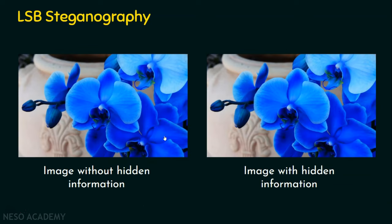Let me show an example with a blue orchids image. The first image is without hidden information, and the second is with hidden information. No one can tell that information is hidden in the second image. For each pixel, we take its 24-bit RGB value and replace the least significant bits of the R, G, and B parts with the binary bits of our hidden data. The image appears nearly identical with only a slight modification, but our information is successfully hidden within the pixel data.